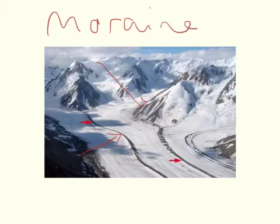The glacier may then retreat if ablation is occurring more than accumulation, back up the mountainside. However, in the colder months of the year it may advance again, as accumulation is greater than ablation, and it can bulldoze all of that material to create an even larger terminal moraine. So that's moraine done in about 1 minute 40 seconds — pretty easy.